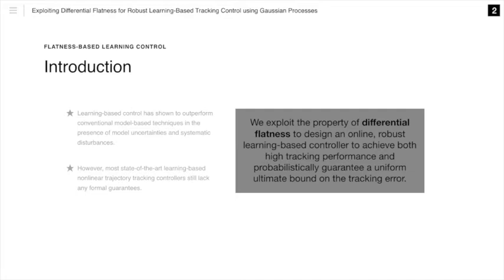Learning-based control has shown to outperform conventional model-based techniques in the presence of model uncertainties and systematic disturbances. However, most state-of-the-art learning-based non-linear trajectory tracking controllers still lack any formal guarantees. Today I'll present our work where we exploit the property of differential flatness to design an online robust learning-based controller to achieve both high tracking performance and probabilistically guarantee a uniform ultimate bound on the tracking error.